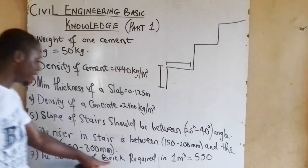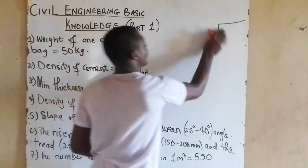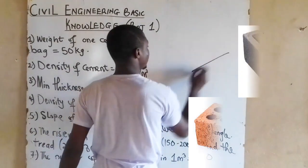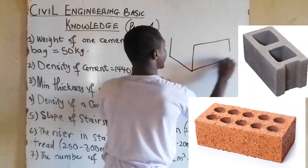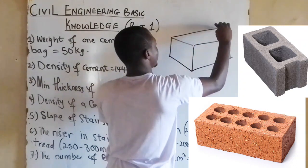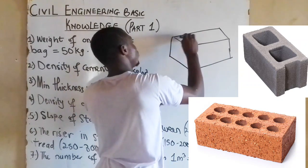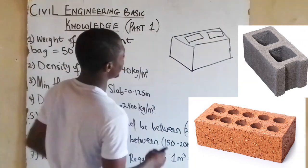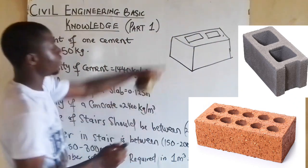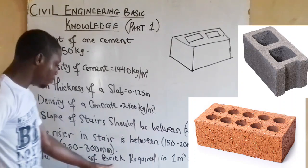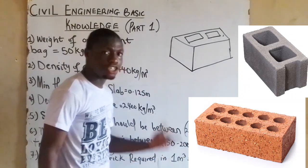Next up, the number of brick required in one cubic meter is 500, 550. Let me draw a brick. What is a brick? These are the bricks look like. This is a brick, a block. So, they said the number of bricks required in one meter cube is 550 bricks are required in one meter cube.